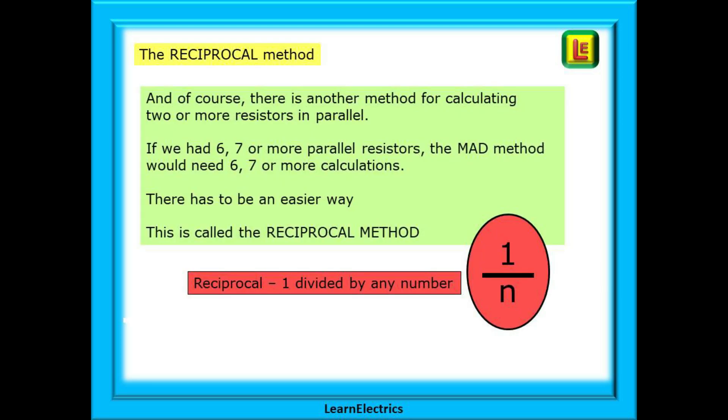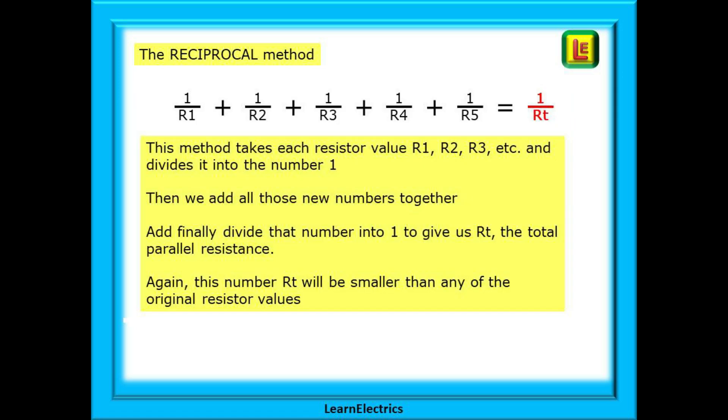And of course, there is yet another method for calculating two or more resistors in parallel. If we had six, seven, or more parallel resistors, the MAD method would need six, seven, or more calculations. There has to be an easier way. And this is called the reciprocal method. This looks complicated but it isn't. And it works for any number of resistors. You just need to be methodical when working things out.